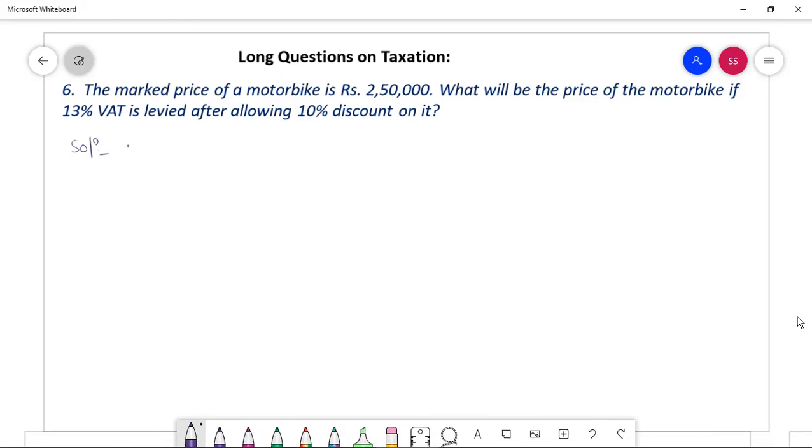Here mark price equal to Rs 2,50,000. I have written in shortcut. And what is discount percent? Discount percent equal to 10 percent and VAT percent equal to 13 percent.